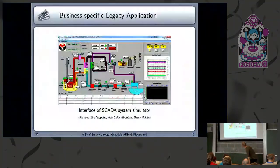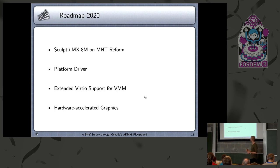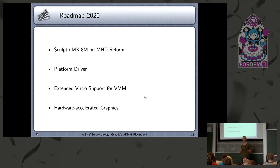So those are my technical demonstrations. My last slide is the roadmap for the upcoming year. I definitely want to push Sculpt development on ARMv8 further — Sculpt on the MNT Reform would be really cool. But for this to happen we need a platform driver. The drivers are running, but we do not have access to the PCI bus or to clocking and power management. We want more VirtIO support so we can use it interactively, then we could use Sculpt OS desktop as we know it from the x86 world. And it would be cool to use hardware accelerated graphics. Those are the plans for this year. Now I'm open for questions. Thank you for your attention.